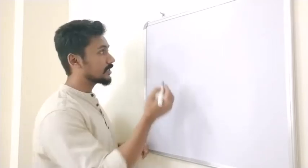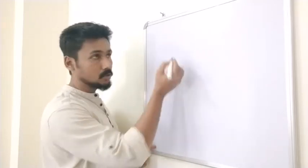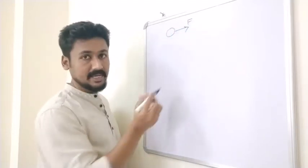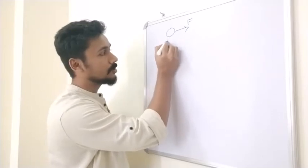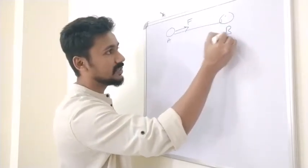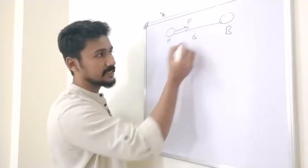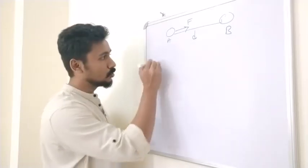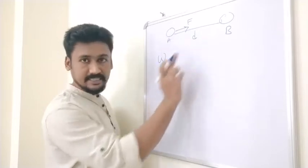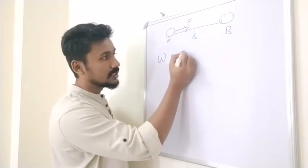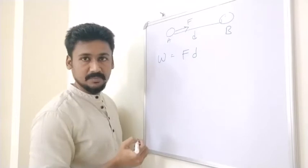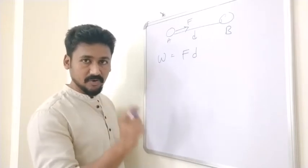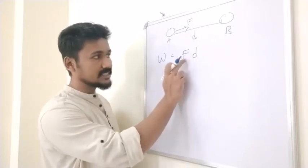Now we want to find out a formula for work. To do some amount of work, there must be some amount of force applied. If this force is applied, the object will move from point A to point B and there will be some displacement D. So we say that the work done will be equal to the force multiplied by the displacement: W is equal to F into D. Work is defined as the product of force and displacement.